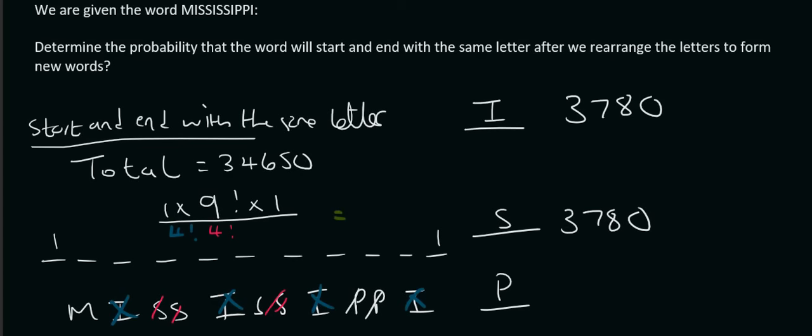So now we can go work this out. So that's going to be 9 factorial over 4 factorial times by 4 factorial. And that gives us 630. So now what we do is we just add these three together to get the total number of words that you can make where they start and end with the same letter.